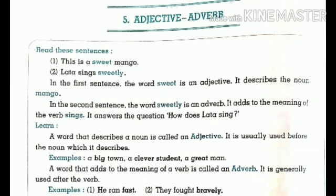Adverbs add to the meaning of a verb. It is generally used after the verb. So in our example, 'sings' was the verb, and the adverb 'sweetly' came after it — describing how she sings. So 'sweetly' is the adverb. For example: 'He ran fast' — he was running, but how? Fast. And 'They fought bravely' — they fought, but how? Bravely.